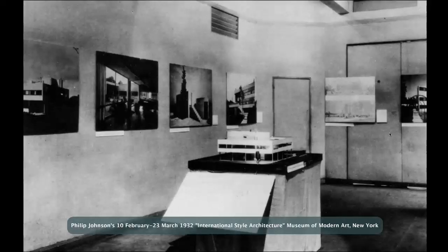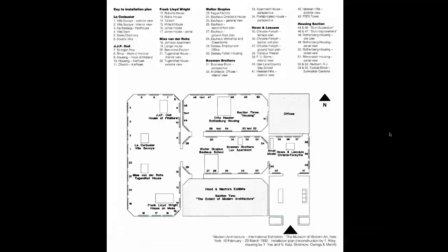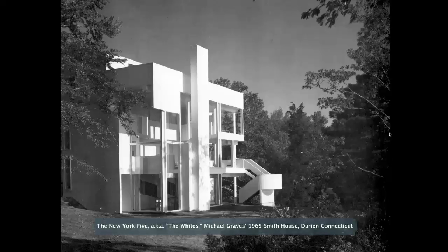The Villa Savoie becomes one of the focal points of the 1932 Museum of Modern Art exhibition, The International Style, curated by Philip Johnson — the architect of the glass box in New Canaan, Connecticut. The greats venerated in modern architecture: Mies van der Rohe, Corbusier, Walter Gropius, and Frank Lloyd Wright. In the post-war period, the New York Five — also referred to as the Whites — all work on projects that are more or less direct extensions of Corbusier's vocabulary at its apotheosis in 1929 with the Villa Savoie.